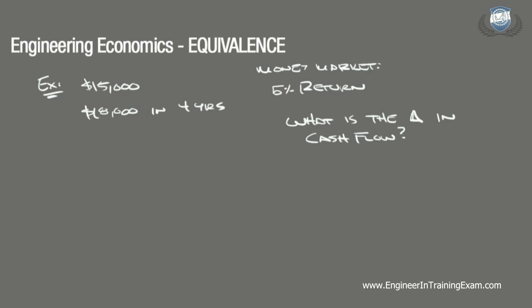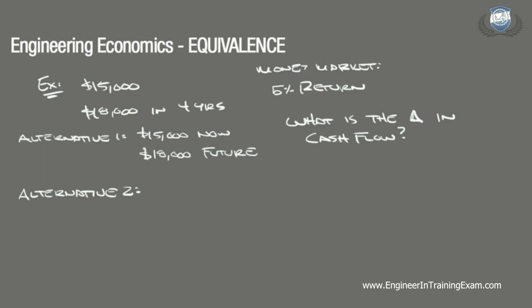Equivalence can be used to compare alternatives occurring at different times with a goal of determining which has the largest potential for profit. The first alternative is already defined: invest $15,000 now to receive $18,000 in the future. The second alternative is to invest $15,000 now and receive 5% annual return in the money market over four years. The fiscal effects of the second alternative are not known, so we must determine the equivalent balance in the money market after four years.